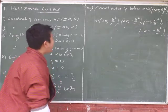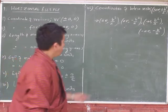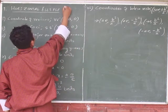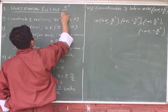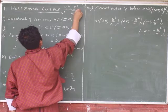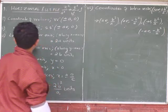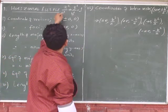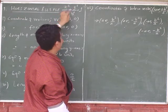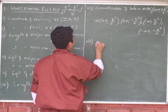The equation of this horizontal ellipse: since the major axis is along the x-axis, the equation is x²/a² + y²/b² = 1. 'a' is under x because the major axis is along x, and 'b' is under y because the minor axis is along y.